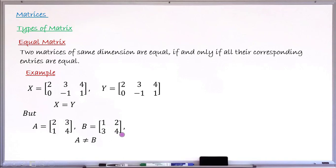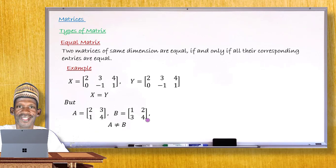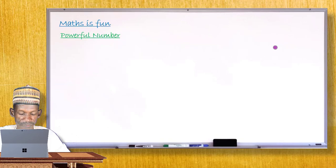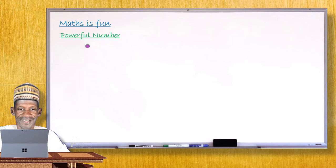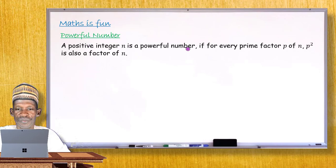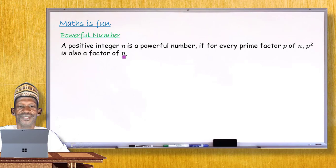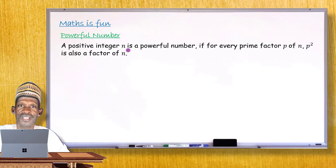With that, I have come to the end of this lesson. Let me now move to the last segment to explain what powerful numbers are. A positive number n is powerful if, for every prime factor p of n, p squared is also a factor of the same number n.